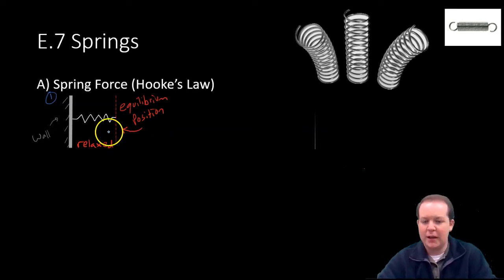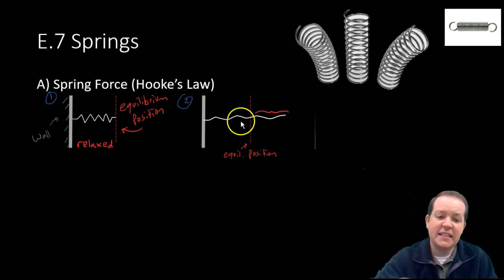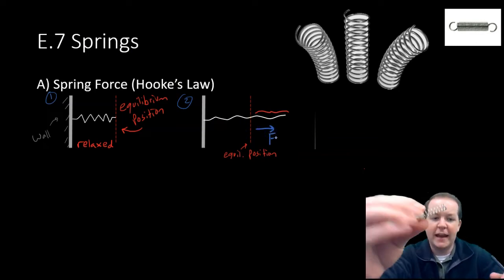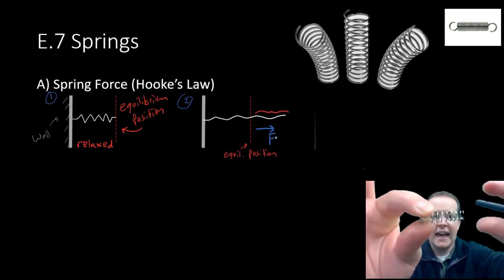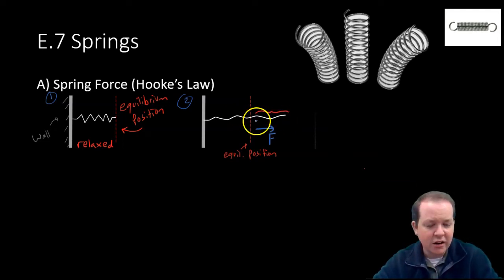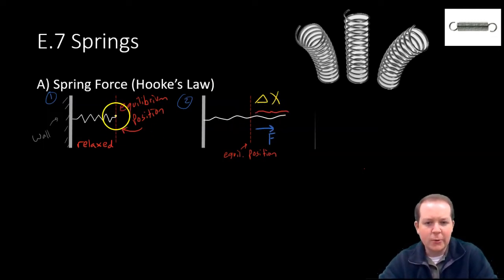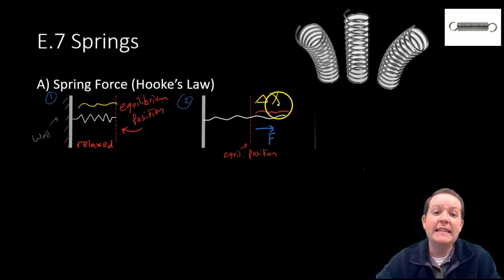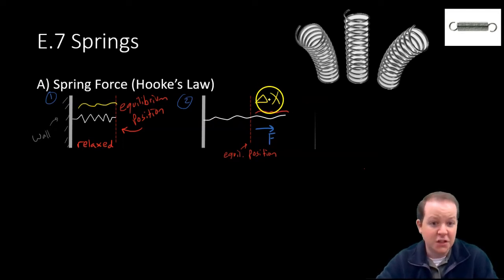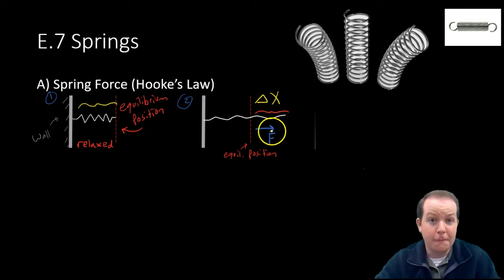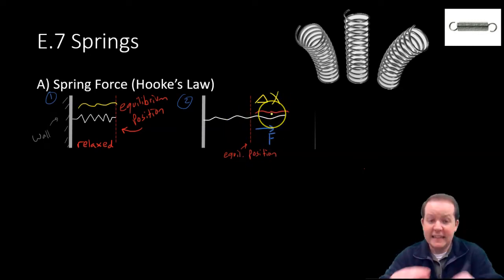Now imagine I take that same spring tied to the wall and start applying a force, pulling the spring across so it's being stretched a bit. I applied a force, and now the spring is elongating. This little distance is referred to as delta x — it's a displacement. The spring was originally at this equilibrium location. Now this is some additional length, a displacement of the spring. Maybe I stretched it an additional 2 centimeters. So I can apply a force on a spring, make it stretch, and it's displaced a certain distance from its equilibrium position.